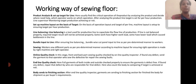Line balancing is a tool used in the production line to maintain the capability and flow of production. If the line is not balanced properly, the target result will not be achieved properly. After ensuring line balancing, bundles of cut parts are fed into the line in a determined manner.